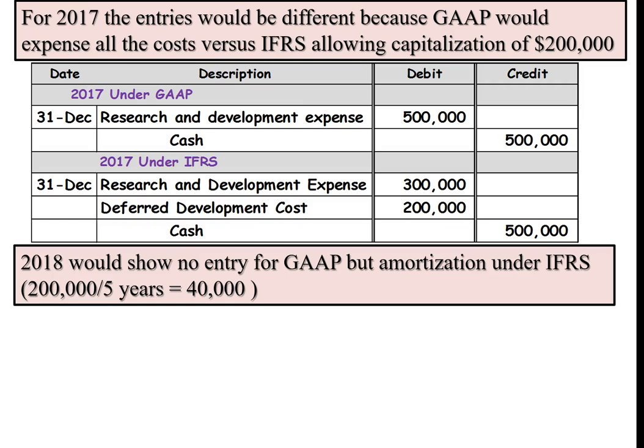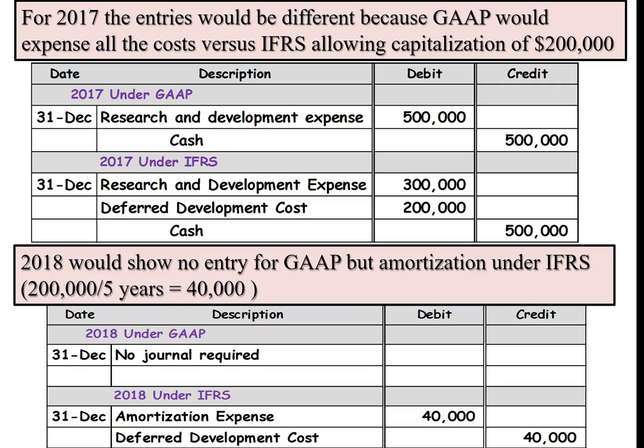In 2018, the product does go to market. There would be no journal entry under GAAP since we've already expensed it all in the previous year. But under the International Standard, we would amortize $40,000 by taking the $200,000 divided by five years. So no journal entry under GAAP, but under the International Standard we would amortize the $40,000 and take it against the intangible asset.